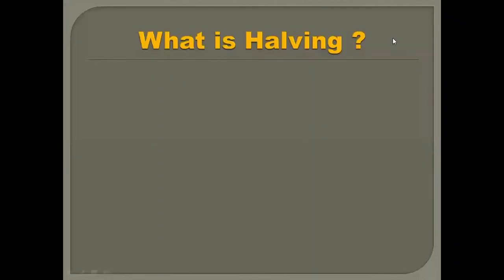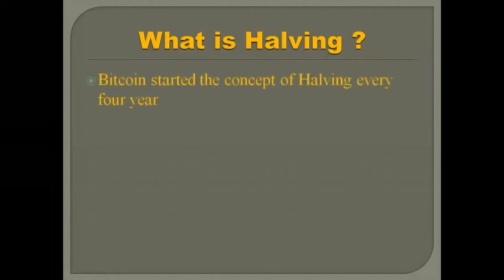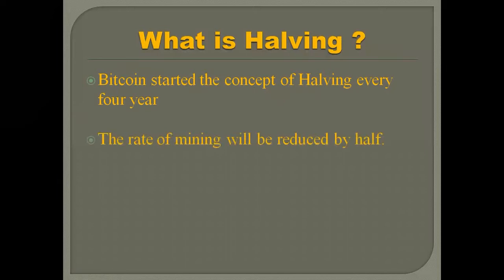The first topic for today's video is what is happening in Pi Network. Before we answer this question, let us go a bit into the history of cryptocurrency. The world's first cryptocurrency is Bitcoin, and it was introduced in the year 2008 after the subprime market crisis. In the world of Bitcoin, there is a concept of halving, and this halving occurs every four years. Halving is when the rate of mining is reduced by half.